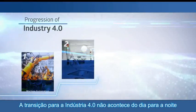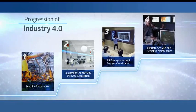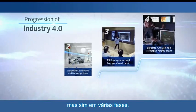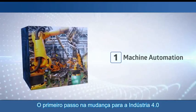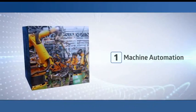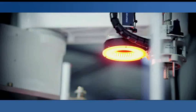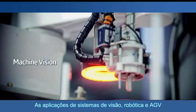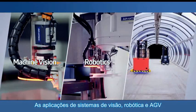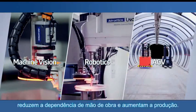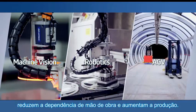The transition to Industry 4.0 does not happen overnight, but rather step-by-step. The first step in Industry 4.0 transformation is machine automation. The application of machine vision, robotics, and AGV reduce dependence on manpower and tighten up production.